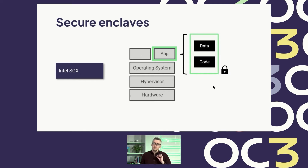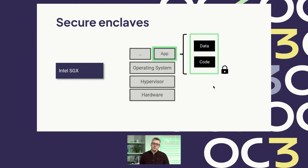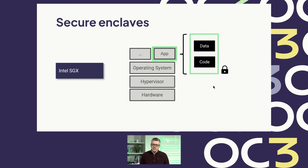From the outside, it will look as if the CPU was processing only on encrypted data. There is also remote attestation, and the CPU will provide a certificate that proves the authenticity and integrity of everything running inside the enclave, and then you can share your data securely with that enclave. SGX enclaves only exist on Intel hardware and have been around for roughly 10 years. This concept is still alive and kicking.